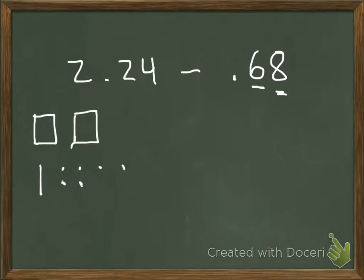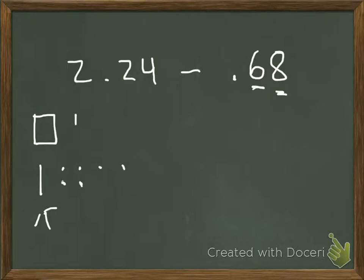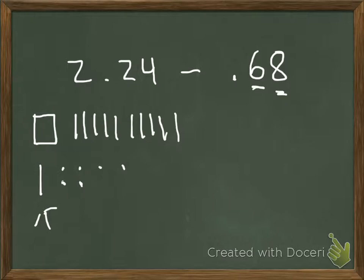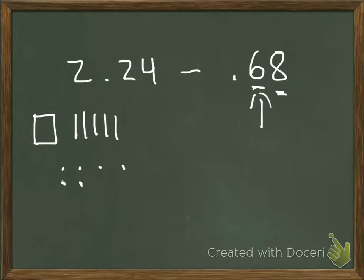Now I move on to the next place and have to take away 6 tenths. But the problem is I only have 1 tenth left. I can't take 6 tenths from 1 tenth. So I'm going to borrow from a whole piece — in one of those wholes, there are 10 tenths. I regroup, borrowing from the whole and replacing it with 10 tenths. Now I have 11 tenths total, and I subtract those 6 tenths: 1, 2, 3, 4, 5, 6. I'm left with 5 tenths remaining.